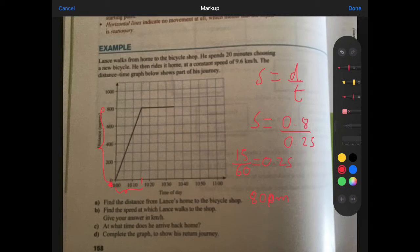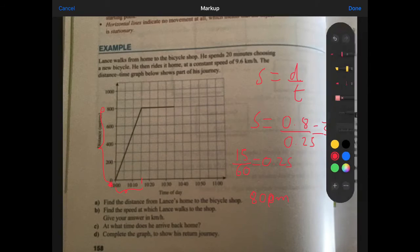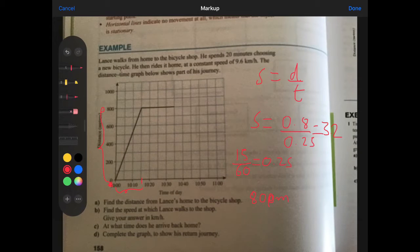So the speed at which he walks there is 0.8 divided by 0.25, which equals 3.2. So the answer to part B is 3.2 kilometers per hour. Remember, I need to give the speed in kilometers per hour. That's what they asked me to do here. So that's why I had to convert the unit. You need to be really careful with that. What time does he arrive back home?